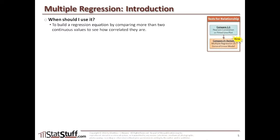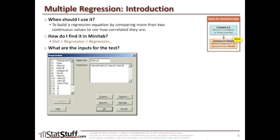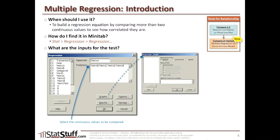Now let's talk about how you can run the multiple regression test from within Minitab. The multiple regression test is used when we want to build a regression equation by comparing more than two continuous values at a time to understand how they're correlated. To run this test, go to the Stat menu, select Regression, and then select Regression again. In the dialog box that opens, you'll select the primary continuous Y response value, as well as all the other continuous values you're comparing as the predictors. Also select the Graphs button and choose the 4-in-1 option to see the residual plots related to this test.